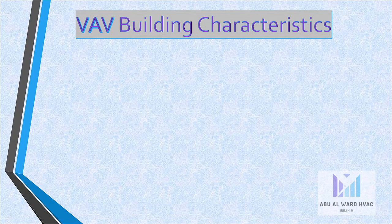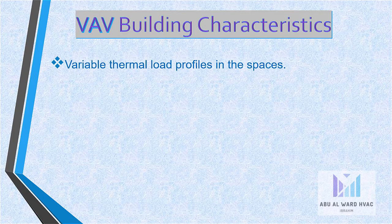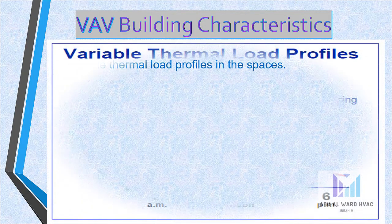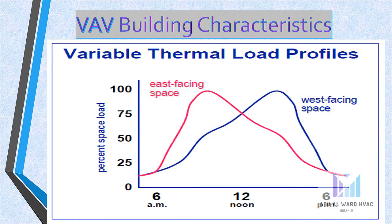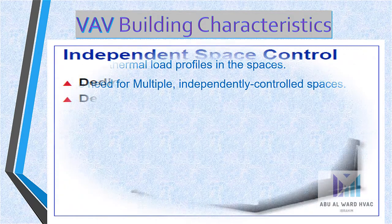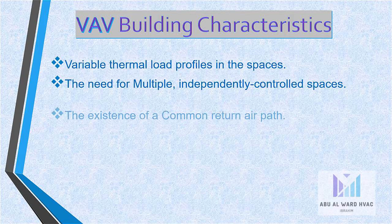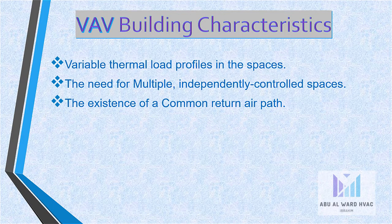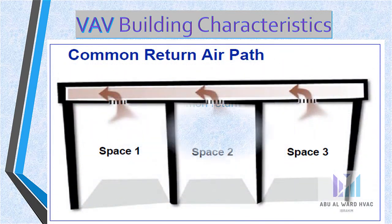The VAV building characteristics include: variable thermal load profiles in the spaces as shown in the diagram, the need for multiple independently controlled spaces, and the existence of a common return air path — where instead of using many return ducts, a general plenum duct can be used.